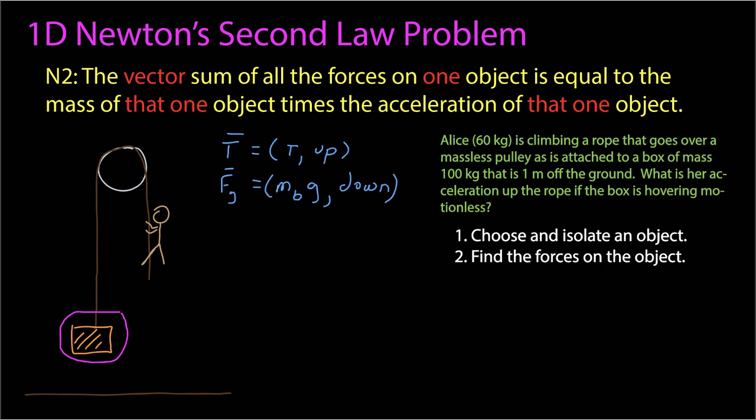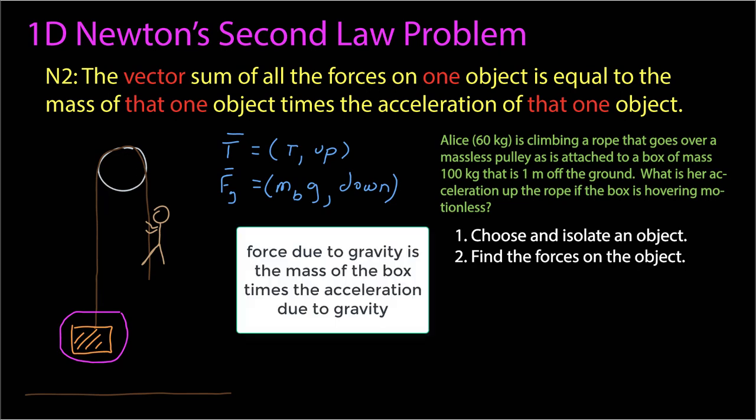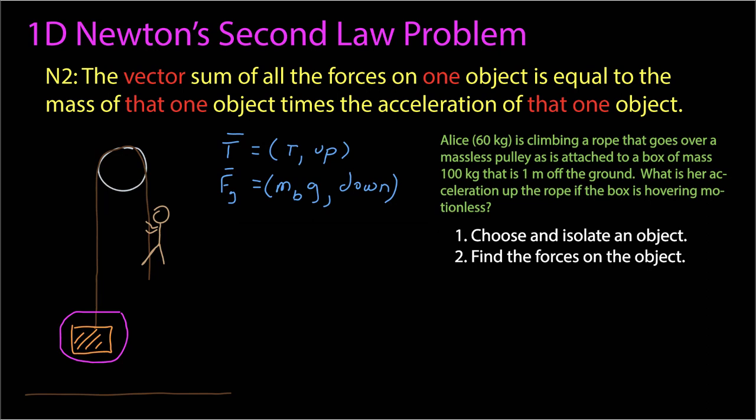Next, what I want to do is find the forces on that object. Well, there's the force due to gravity and there's a tension force due to this rope, and the tension force has some magnitude T and it's up. The force due to gravity has a magnitude equal to the mass of the box times G, and its force is down.